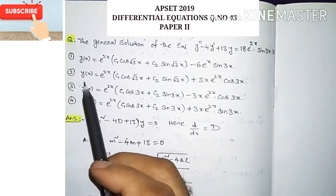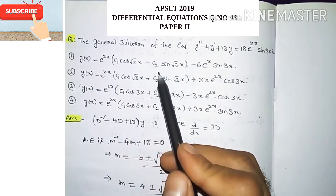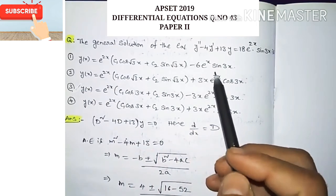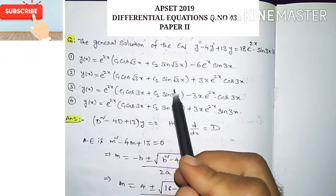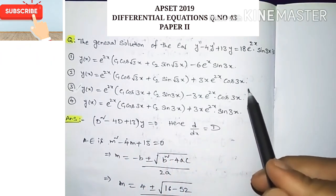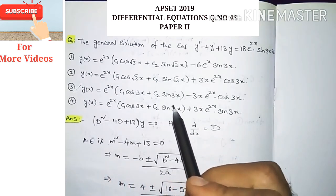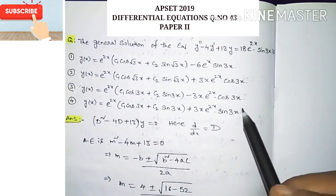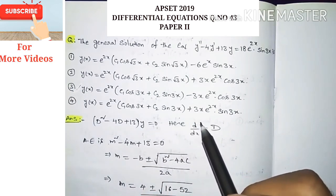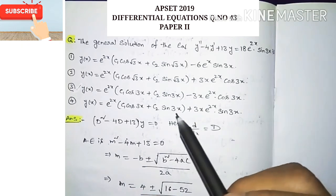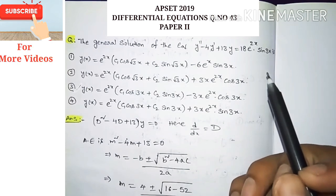The four options are: Option 1: y(x) = e^(2x)·[c1·cos(√3x) + c2·sin(√3x)] - 6e^x·sin(3x). Option 2: y(x) = e^(2x)·[c1·cos(√3x) + c2·sin(√3x)] + 3x·e^(2x)·cos(3x). Option 3: y(x) = e^(2x)·[c1·cos(3x) + c2·sin(3x)] - 3x·e^(2x)·cos(3x). Option 4: y(x) = e^(2x)·[c1·cos(3x) + c2·sin(3x)] + 3x·e^(2x)·sin(3x). We have to choose one correct option, using differential operator notation.